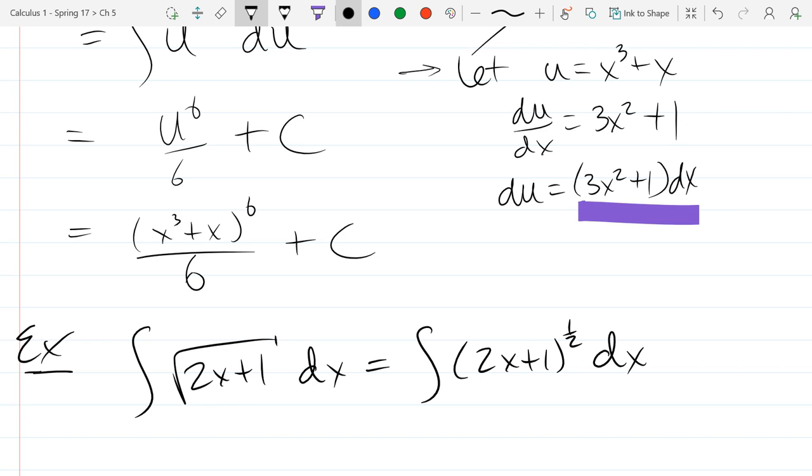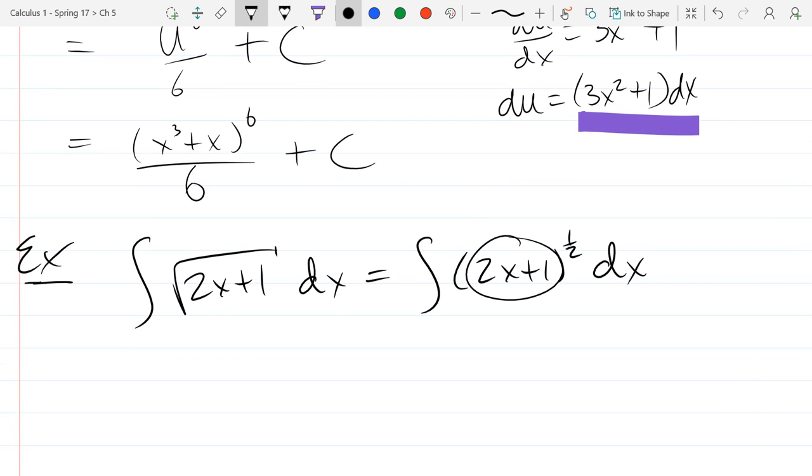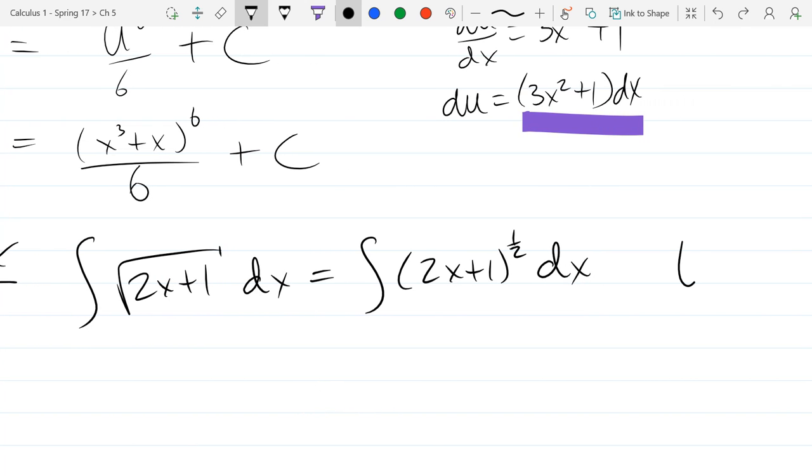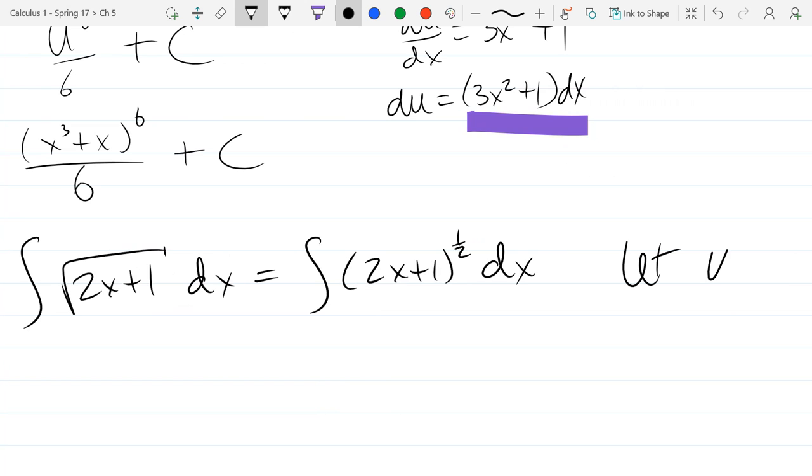Unfortunately there's 2x plus 1 inside, not just x. If this was x I'd add one to the power, divide by the new power and be done with it. But unfortunately there's not just an x inside. So we're in the u-substitution section. Now I'm going to make a useless u-substitution.